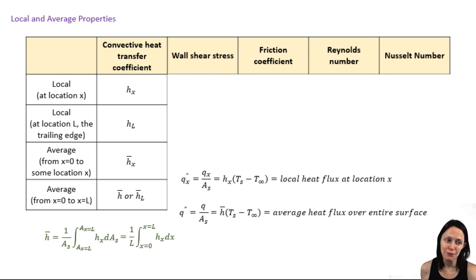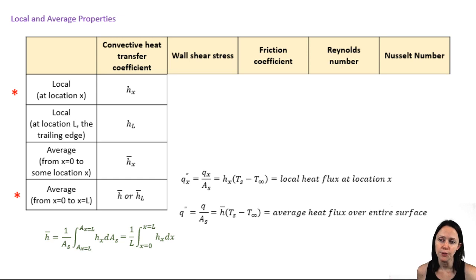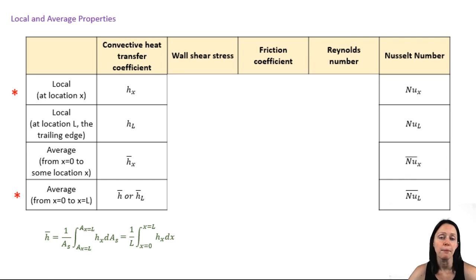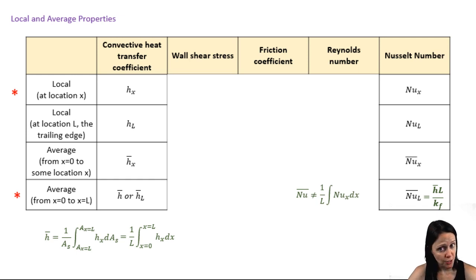We have a lot of different nomenclatures here. The local value at some location x and the average of that parameter over the entire plate, or over a certain section of the plate, are the values most commonly used in this class. You can do the same thing with the Nusselt number. Keep in mind that if you want the average Nusselt number, you're going to have to define it in terms of the average heat transfer coefficient, which is calculated by integration over the plate — so it's the heat transfer coefficient, not the Nusselt number, that's integrated.